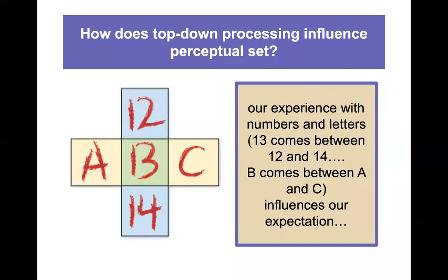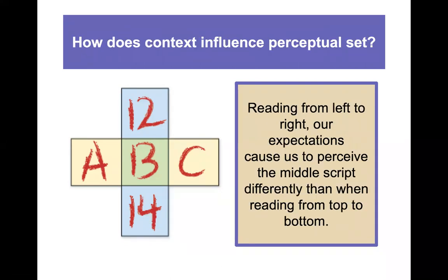So how does top-down processing influence perceptual set? Our experience with numbers and letters — 13 comes between 12 and 14, and B comes between A and C — our prior knowledge really has an effect on what we're seeing. This is a really simple example that happens in many domains of our lives. Reading from left to right, our expectations cause us to perceive the middle script differently than when reading it from top to bottom. The context of where the information is really has an influence on our perception.